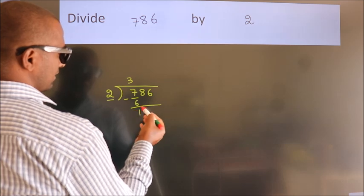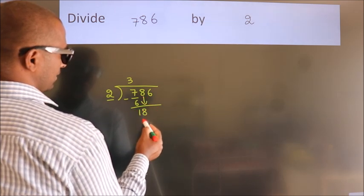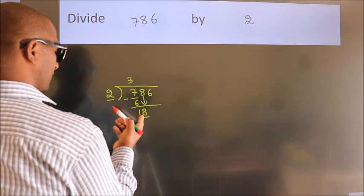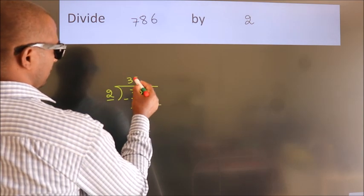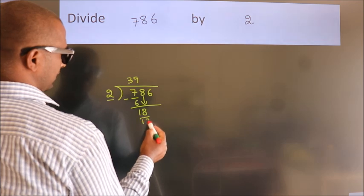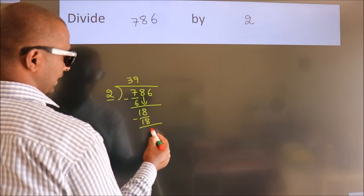After this, bring down the beside number. So 8 down. So 18. When do we get 18? In 2 table, 2 times 9 is 18. Now we subtract. We get 0.